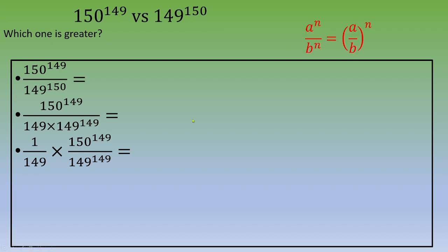According to this formula, a power m over b power m equals a over b power m. So now you got 1 over 149 times 150 over 149 power 149.